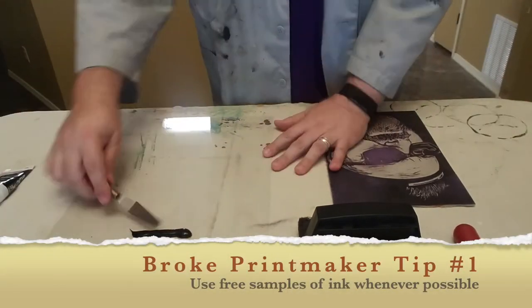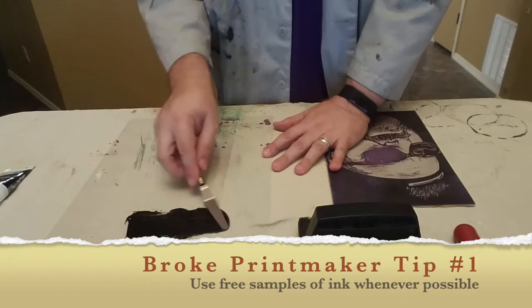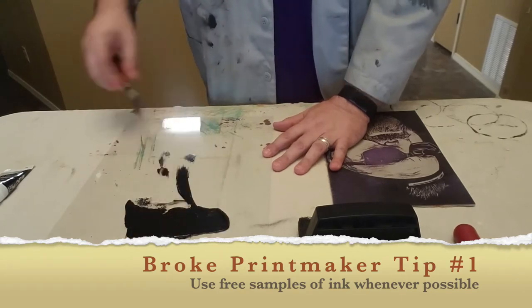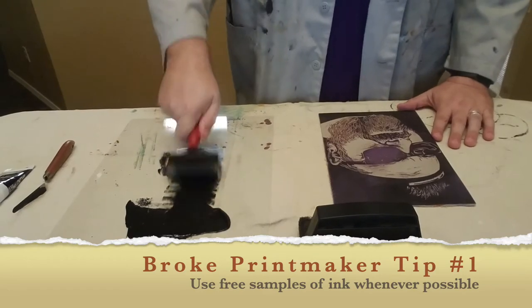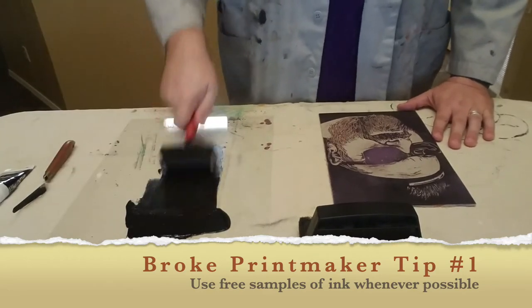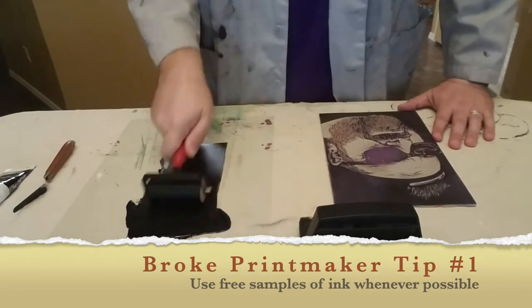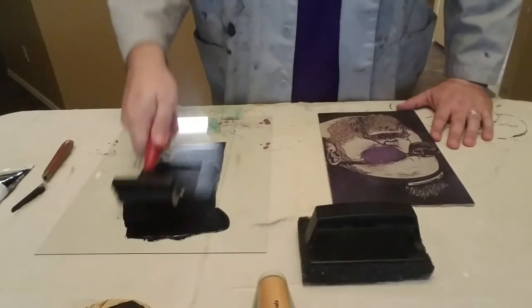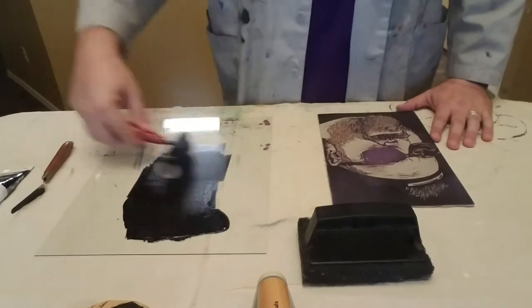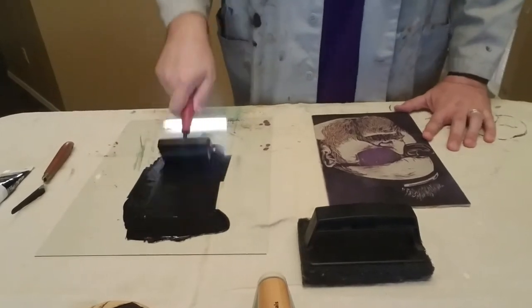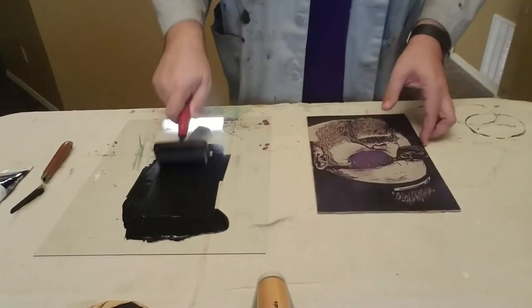Okay, it's time for broke printmaker tip number one. Use free samples of ink whenever possible. I got this tube of ink free with the brayer I'm using. The ink and the brayer are both made by Speedball. The color is called Super Graphic Black by Bill Fick. This stuff is the best for printing on paper.